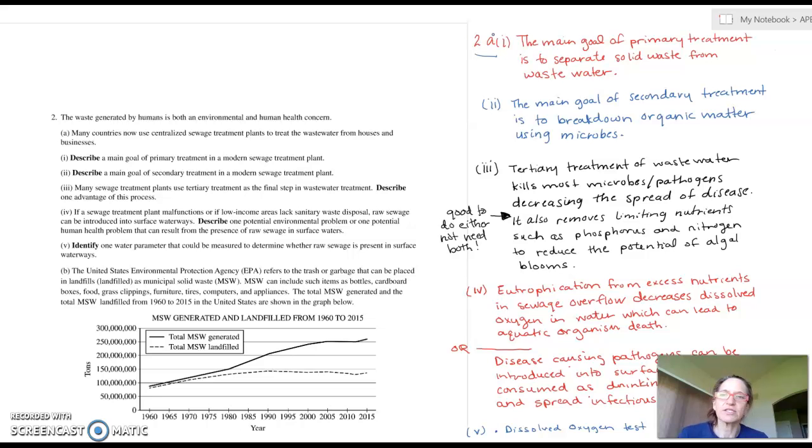Number two asks to describe a main goal of the secondary treatment in modern sewage treatment plants. The main goal of secondary treatment is to break down organic matter using microbes. You can elaborate on the microbes, but I don't believe that you would need to as long as you talk about using microbes to break down organic matter.